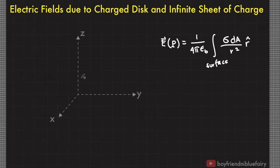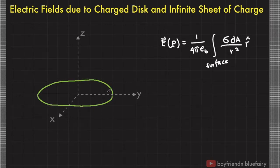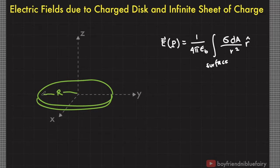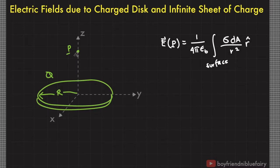Consider this imaginary coordinate system and let's assume that a uniformly charged disk of radius R and total charge Q sits on the xy-plane. We wish to find the electric field at point P on the z-axis, which is at a distance z from the center of the disk. The center of the disk also coincides with the origin.